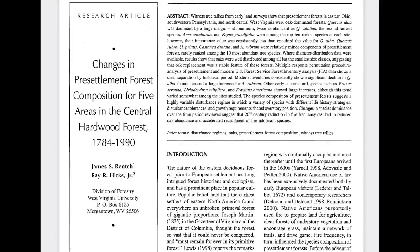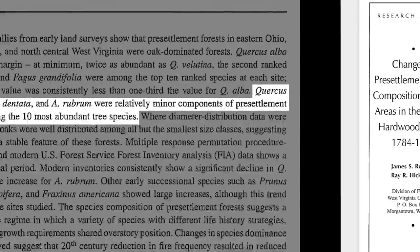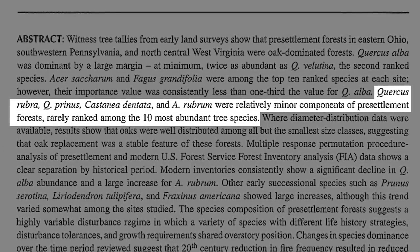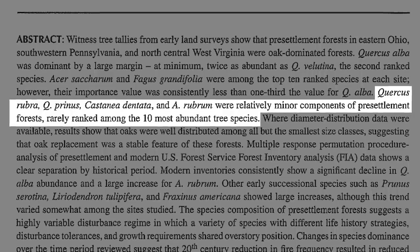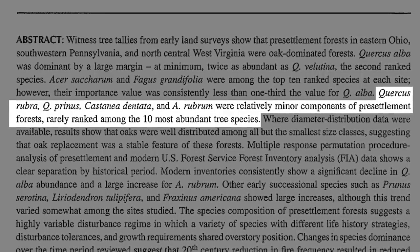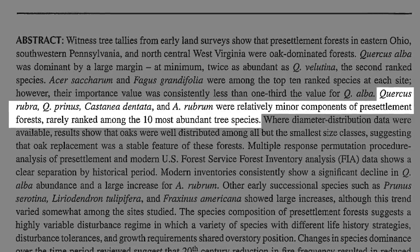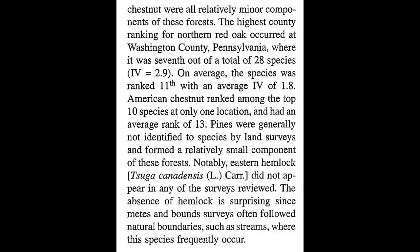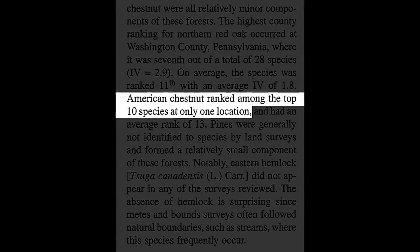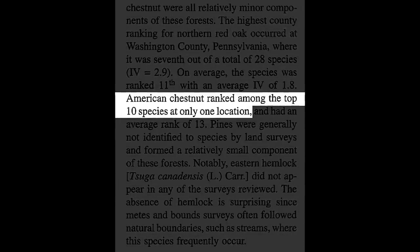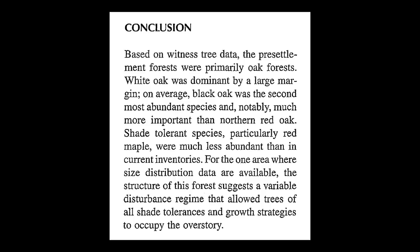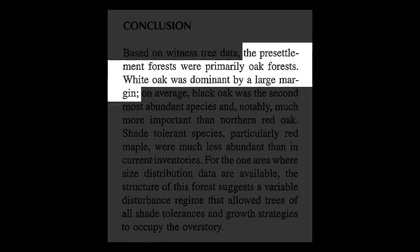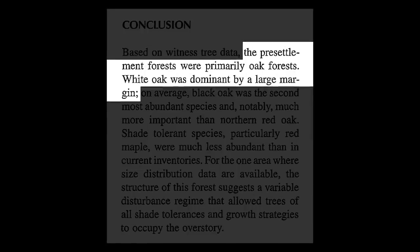Well, the authors made a surprising discovery. Quercus rubra (northern red oak), Quercus prinus (chestnut oak), Castanea dentata (American chestnut), and Acer rubrum (red maple) were relatively minor components of pre-settlement forests, rarely ranked among the 10 most abundant tree species. Later in the paper the researchers stated that American chestnut ranked among the top 10 species at only one location. And in their conclusion, the authors stated that the pre-settlement forests were primarily oak forests, with white oak dominant by a large margin.